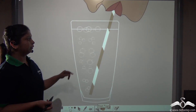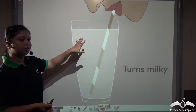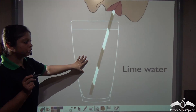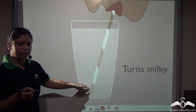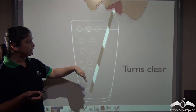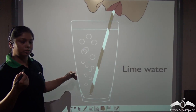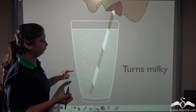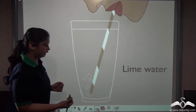Let us see this video. We are exhaling carbon dioxide gas into this solution. What happens — the solution initially turns milky. As this person is bubbling carbon dioxide gas into the solution, it is turning milky. But as more carbon dioxide gas is blown into it, the solution turns clear. First it turns milky, then it becomes clear.